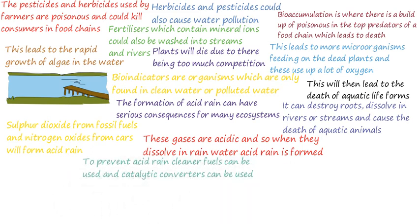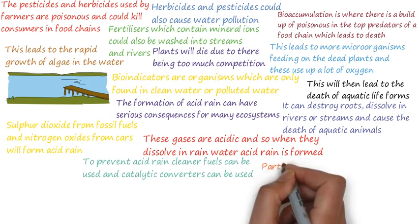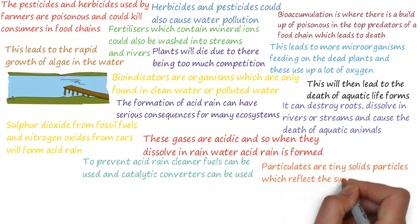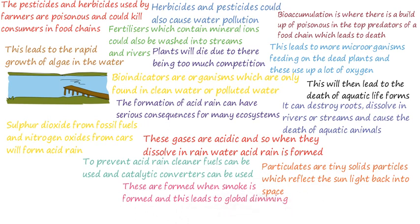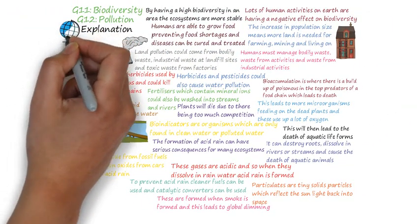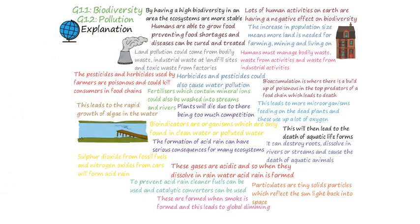To prevent acid rain, cleaner fuel can be used instead of coal, and catalytic converters can also be installed. Catalytic converters remove these polluting gases from the fumes of cars. Particulates are tiny solid particles which reflect sunlight back into space. These are formed when smoke is produced, and this leads to global dimming. Smoke also has effects on human health.